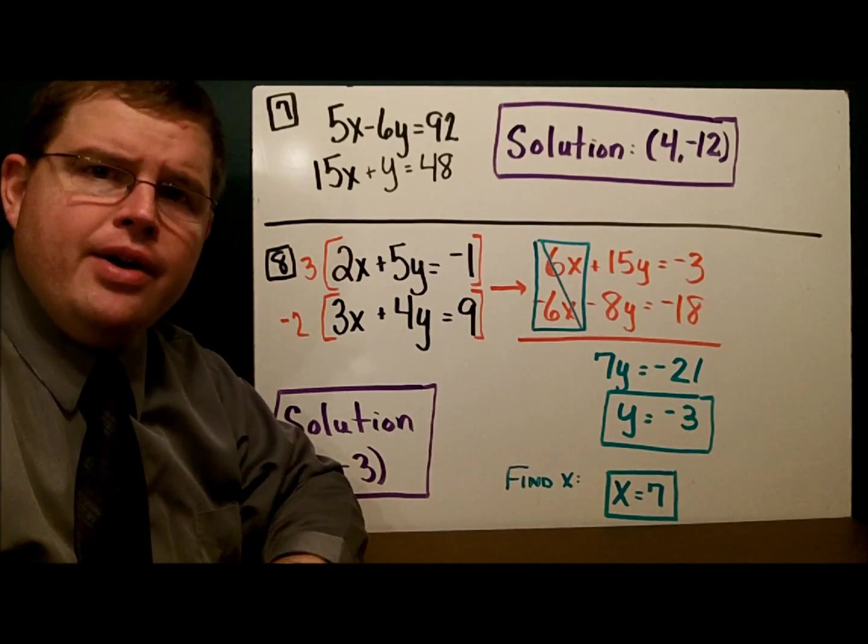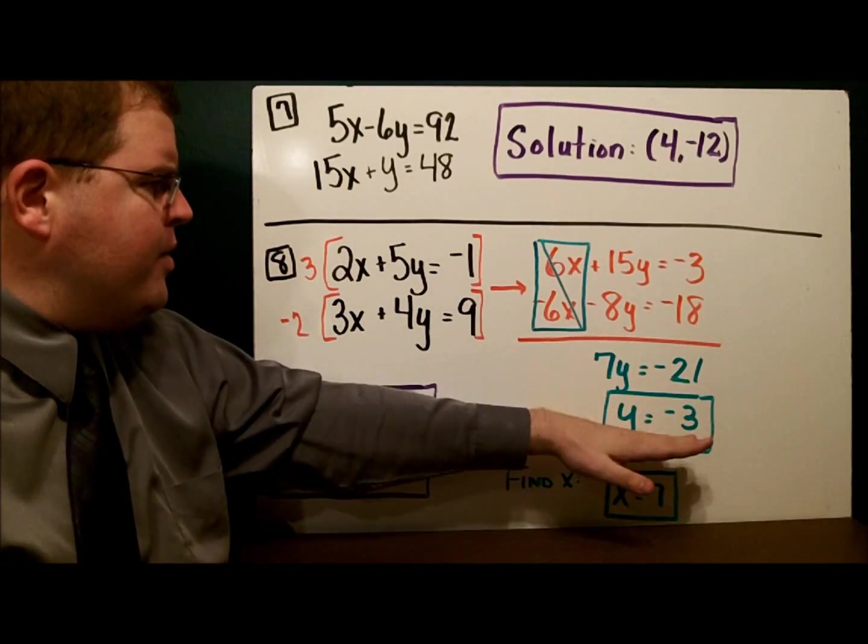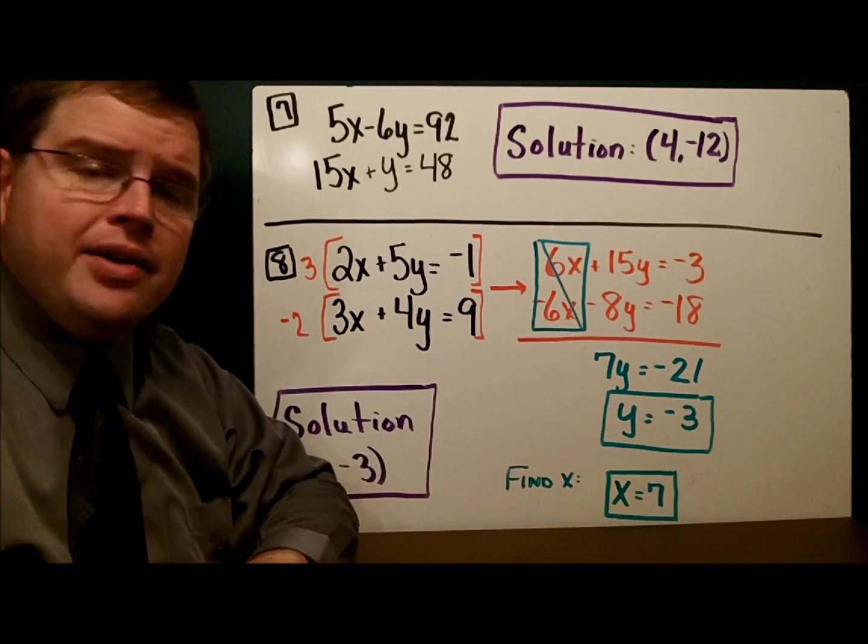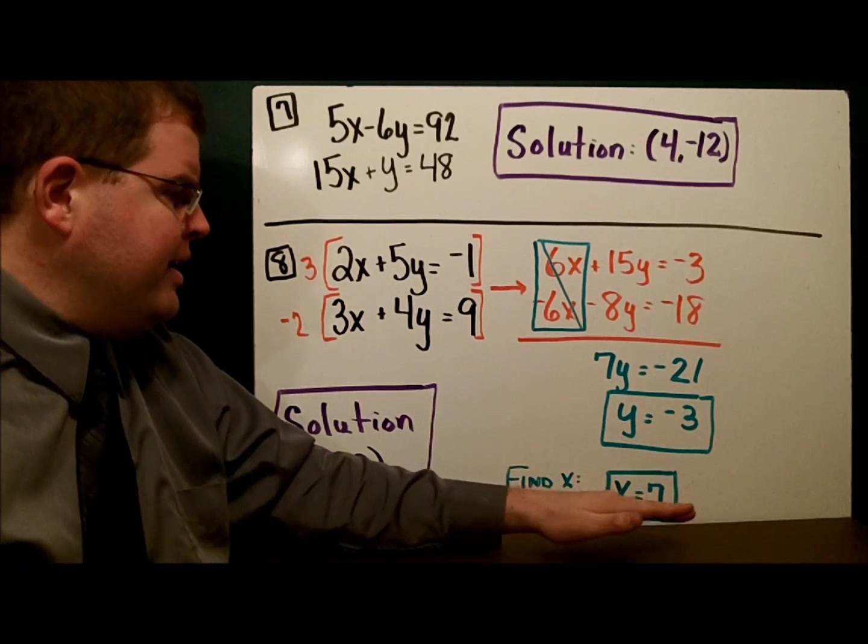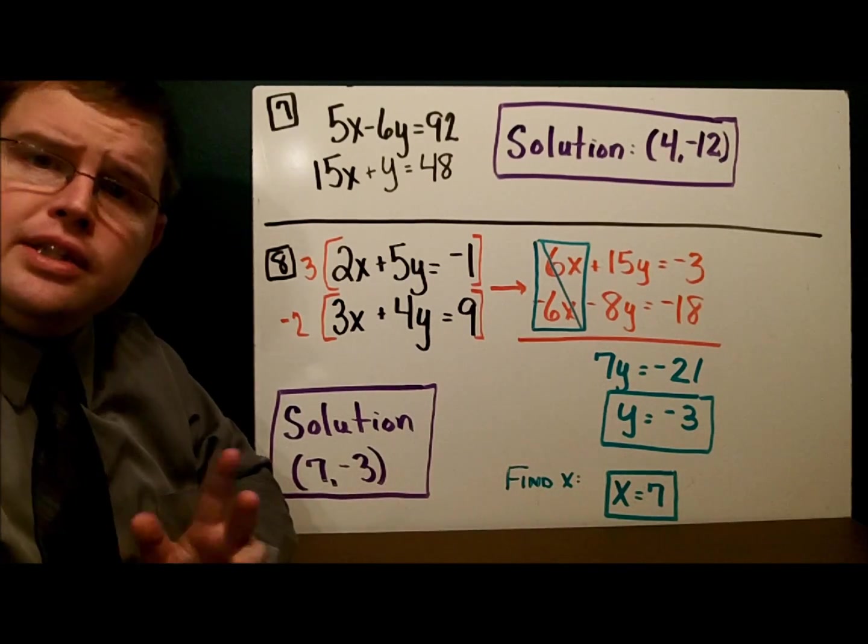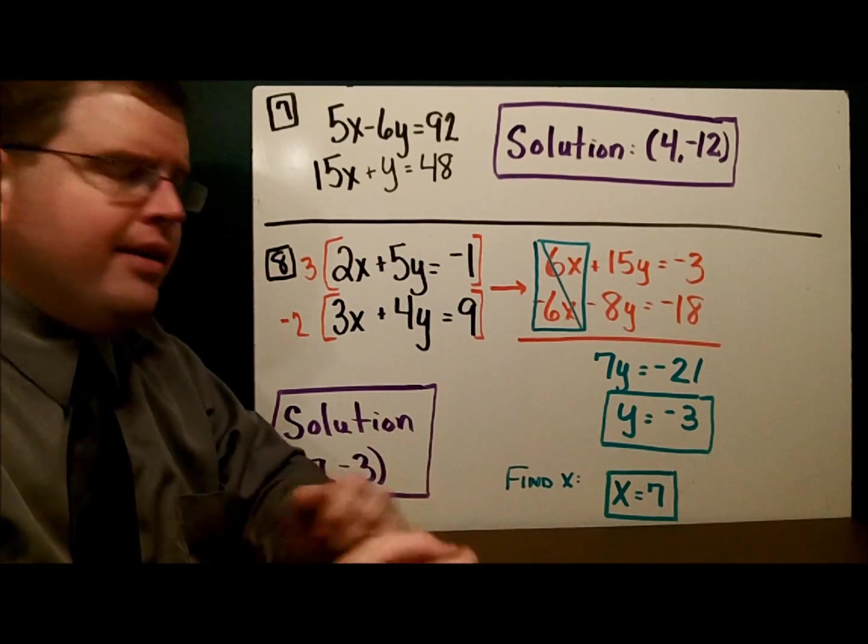This here gives me 6x plus 15y equals negative 3. Down here, I get negative 6x minus 8y equals negative 18. Now, I have my opposite variable. I just go through. Y equals negative 3. And then, I solve for x by plugging into whichever equation I want, and I get x equals 7. So, the solution here is (7, -3).